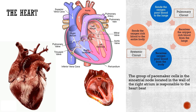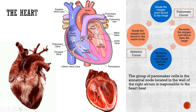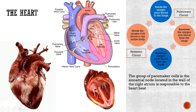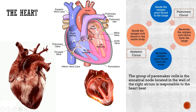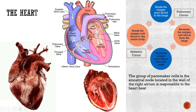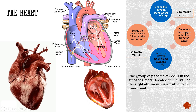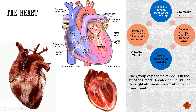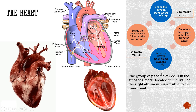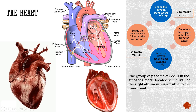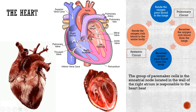Now I will explain how these functions are achieved. The heart is divided into 4 chambers. The upper two chambers are the right atrium and left atrium, and the lower two chambers are the right ventricle and left ventricle. Commonly the right atrium and right ventricle are known as the right heart, and the left atrium and left ventricle are known as the left heart. The group of pacemaker cells in the sinoatrial node, located in the wall of the right atrium, is responsible for the heartbeat.